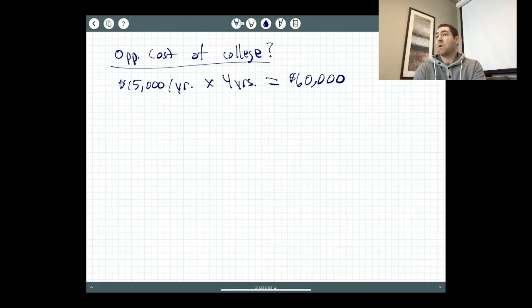So I ask most people, how much did college cost you? And they'll say $60,000. But that's only a fraction of the cost. You're saying, what do you mean, fraction of the cost? So we're forgetting about the opportunity cost here.